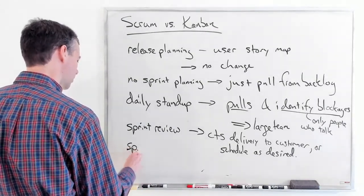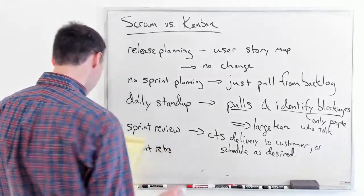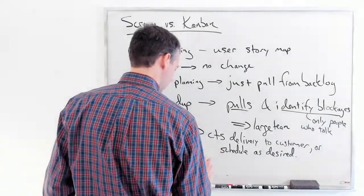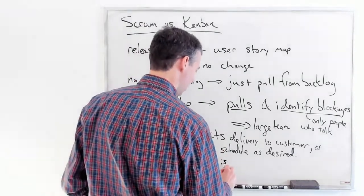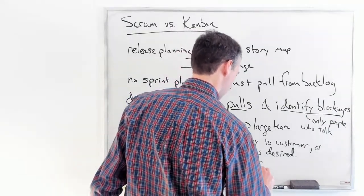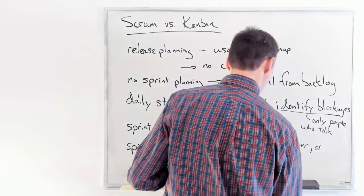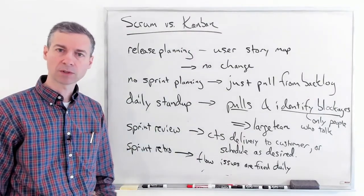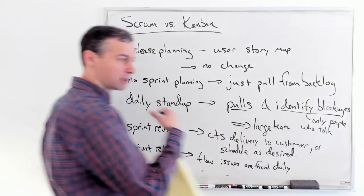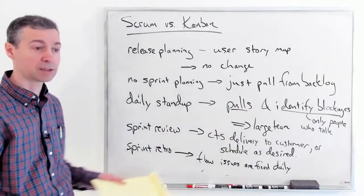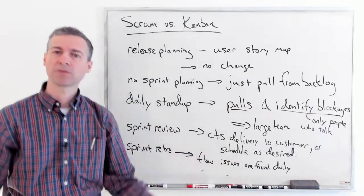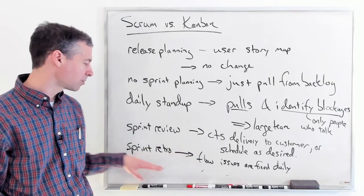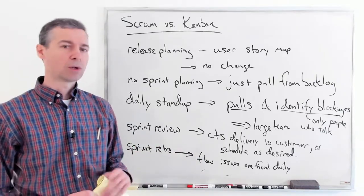What about the sprint retrospective? It's gone too. In the Kanban project management book, it says we don't need it because flow issues are fixed daily. Whenever we have a problem with our process, we work on it. If things are flowing, there's nothing to talk about — no reason to hold a retrospective. When we realize our workflow has a problem at daily standup because there's a blockage, we talk about it as a team and fix what's going on.